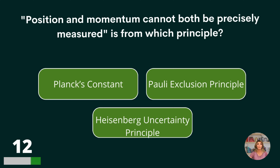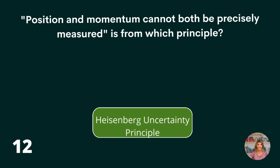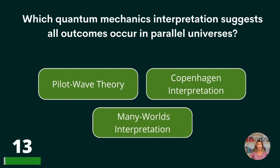Position and momentum cannot both be precisely measured — this is from which principle? Planck's constant, Pauli exclusion principle, or Heisenberg uncertainty principle? Heisenberg uncertainty principle.